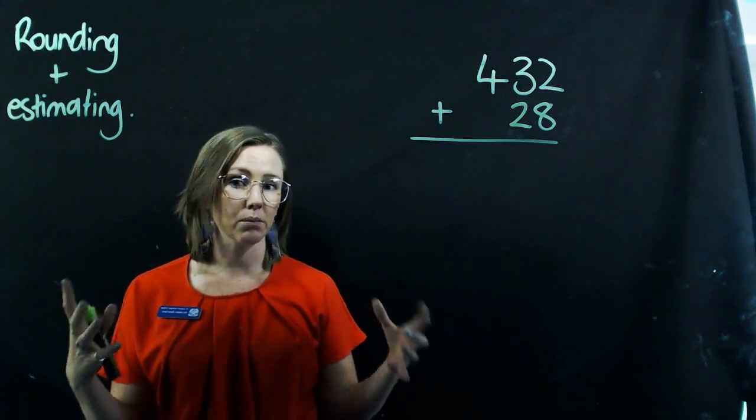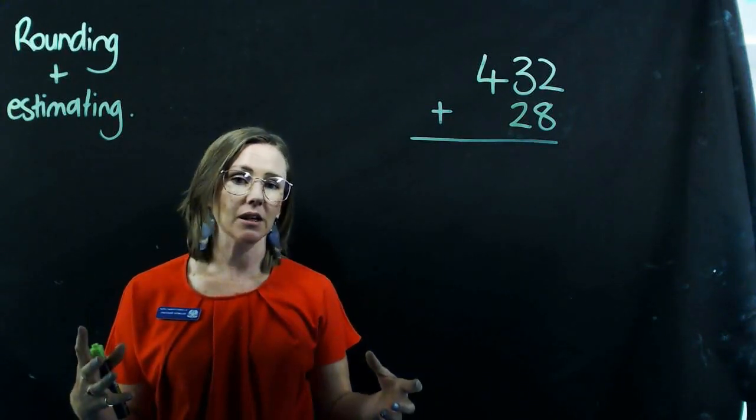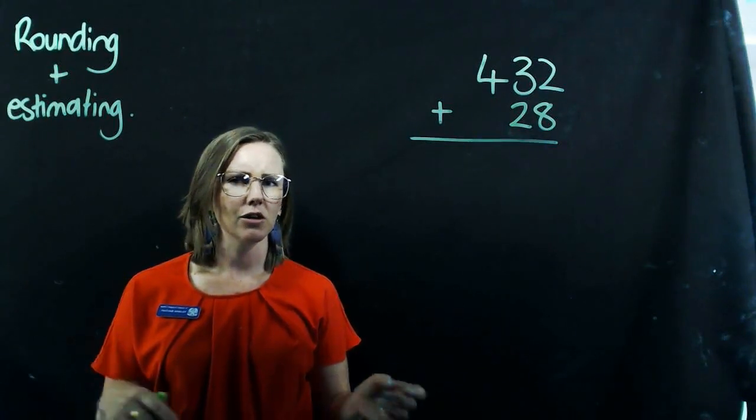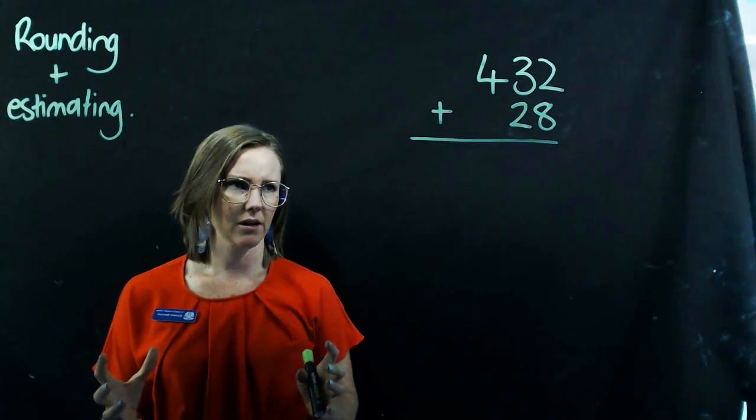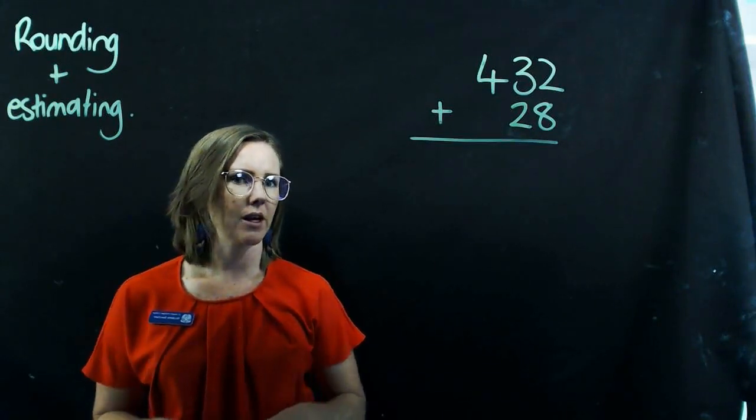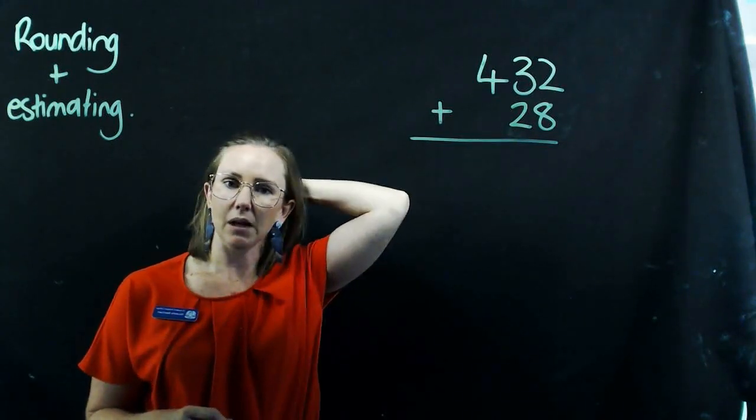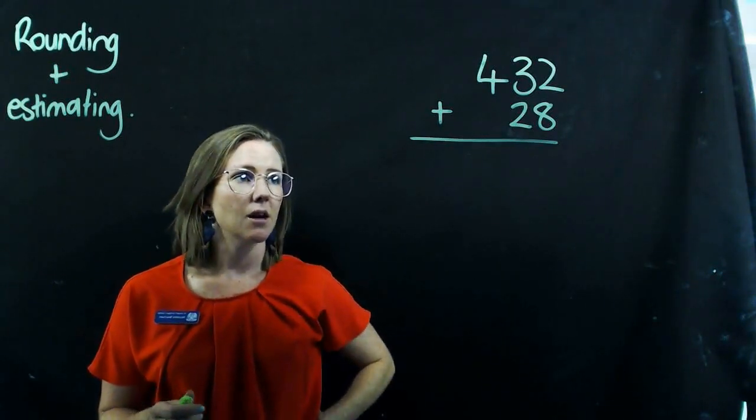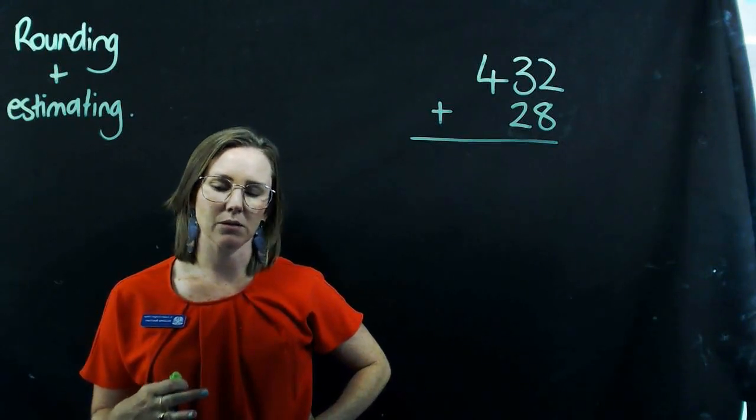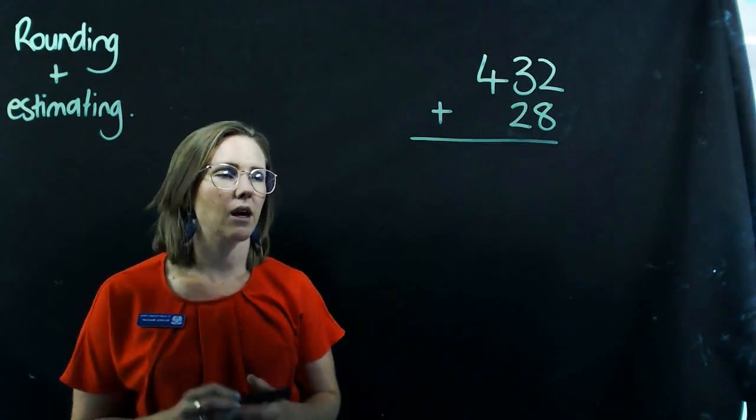So if you are not what I call in the ballpark of what your estimation is when you do a sum, you know that you have to take a little bit of extra time and go back and work out what you've done wrong. This is something that you can do mentally as you're doing subtraction or addition or anything else, but you can also do it by doing some working on paper as well, which I always encourage.